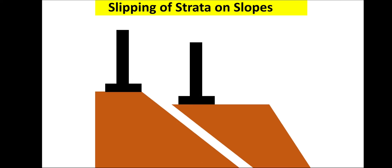Slipping of strata on slopes: different strata or layers exist in soil, and when one strata loses cohesion and adhesion with another, it slips from its position. On a slope, this is a probable reason for structural failure. If one strata slips, it may take away soil from below the structure or footing, causing differential settlement and total collapse of the structure. These were the main reasons for differential settlement.